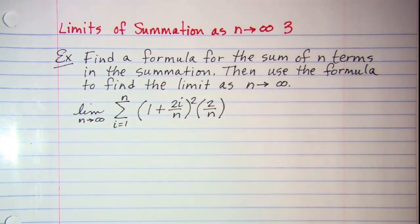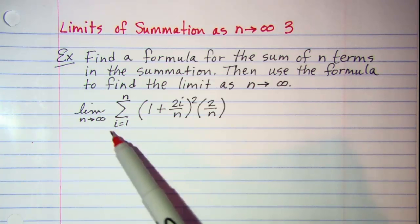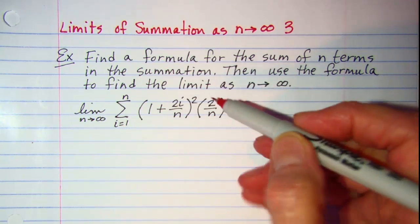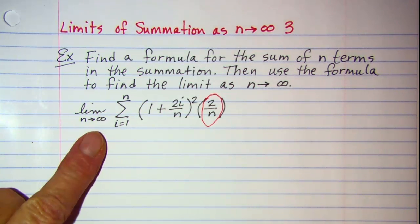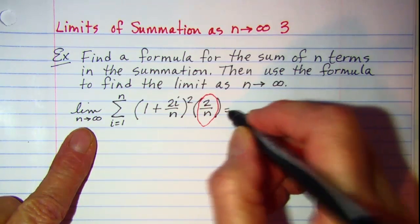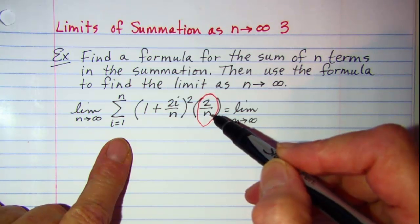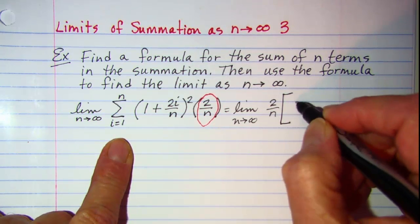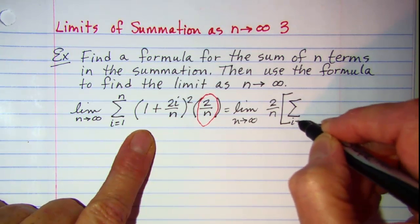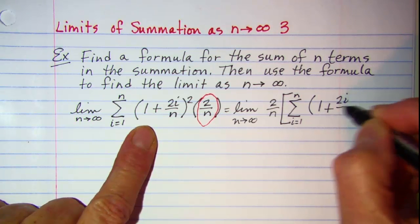Our first step to get our formula is to look for any factors that do not have i, because i is what's changing in our summation. You can see that the 2 over n factor does not have any i's in it, so I can take that factor out in front of my sigma notation. For right now we'll just be ignoring the limit until we're ready to use it. I'm going to pull this 2 over n factor out in front of the summation as i goes from 1 to n of (1 plus 2i over n) quantity squared.